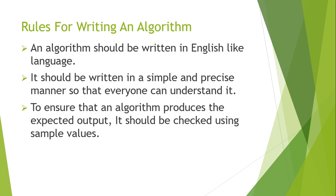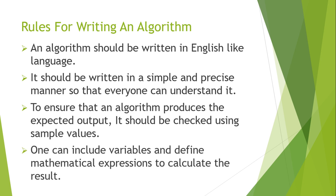The next rule is that one can include variables and define mathematical expressions to calculate the result. If you're new to programming, you may not know what a variable is, so let's understand that first. A variable is a blank memory space which can store any value, and we can give any name to the variable. Whenever we need data in our program — like numbers, string characters, or anything — we need a memory space to store them, and that is what variables are.